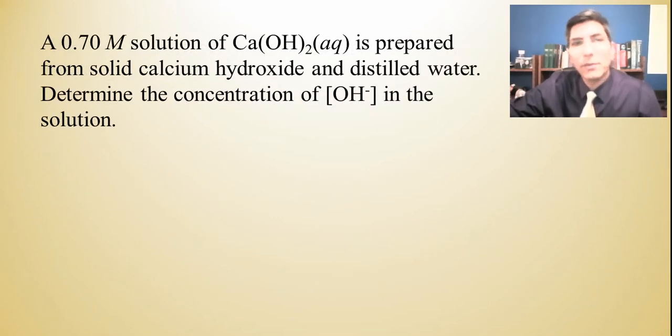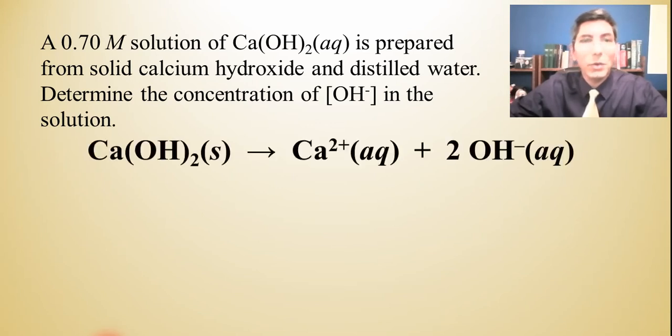Now, let's take an example here. Let's say we have a 0.70 M solution of Ca(OH)2. And it's prepared from solid calcium hydroxide in distilled water. Determine the concentration of OH- in the solution. Some of you might be able just to look at that and tell what the answer is. But let's go ahead and work this out in its complete way here. We want to realize that this is the balanced equation for the dissociation of calcium hydroxide when it's dissolved in water. And if the concentration of the original calcium hydroxide solution here is 0.70, we can write that down. And the mole ratio between the calcium hydroxide and calcium would be 1 to 1. So that means that calcium ions would be 0.70 molar.